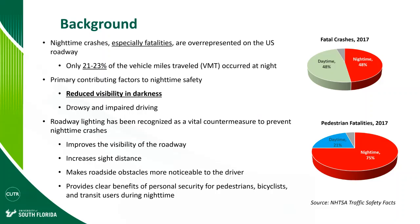Background: nighttime crashes, especially fatalities, are overrepresented on U.S. roadways. The figures on the right show that in 2017, almost half of fatal crashes occurred in dark areas. This is the nationwide statistics. And for pedestrian fatalities, we know that's a very high percentage. Meanwhile, only 21 to 23 percent of vehicle miles traveled occur at night.